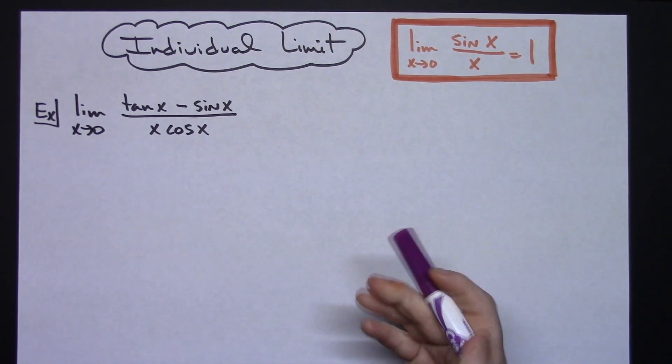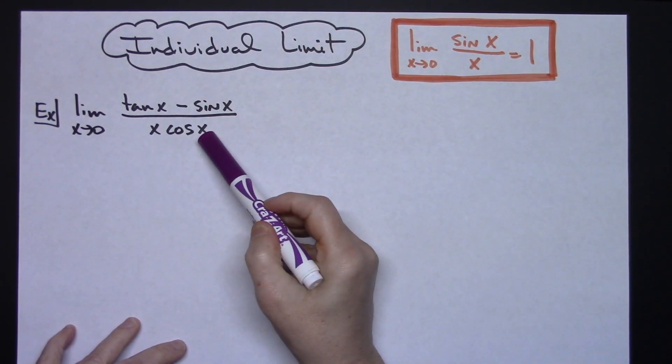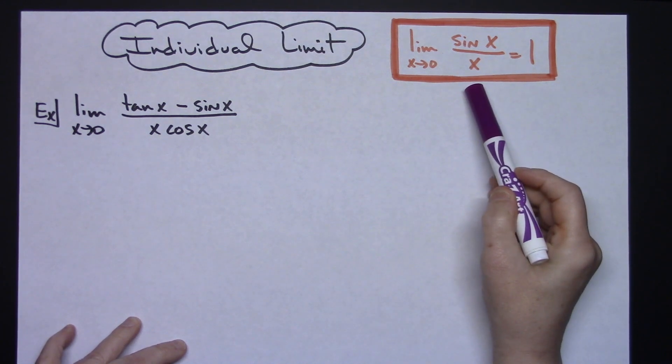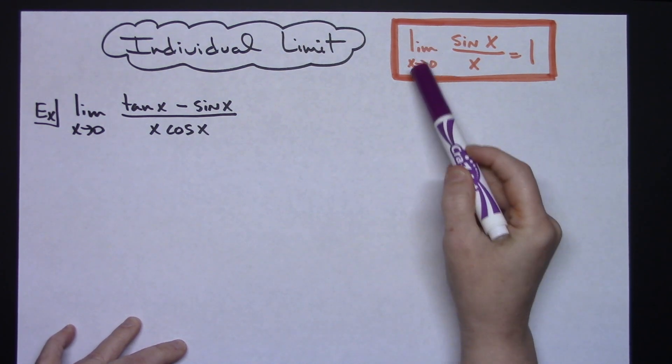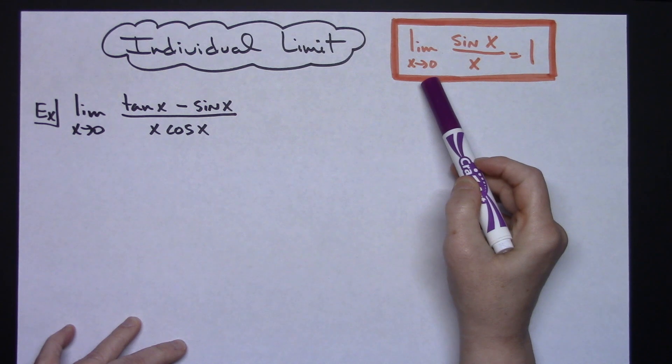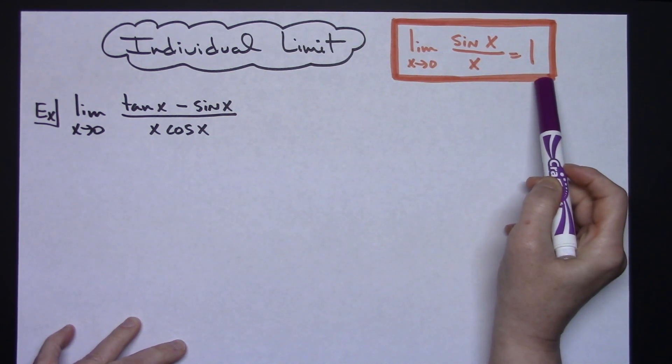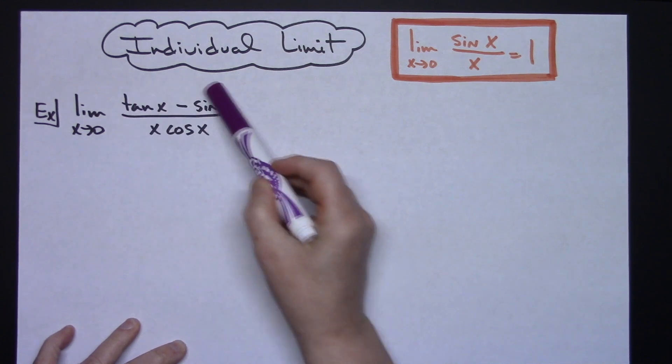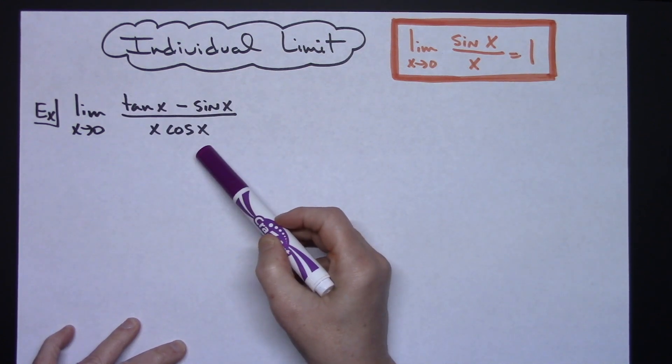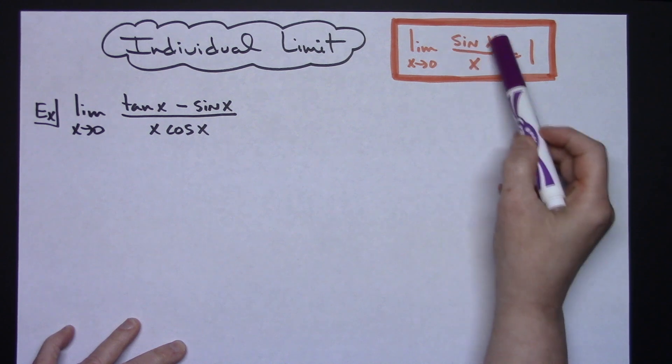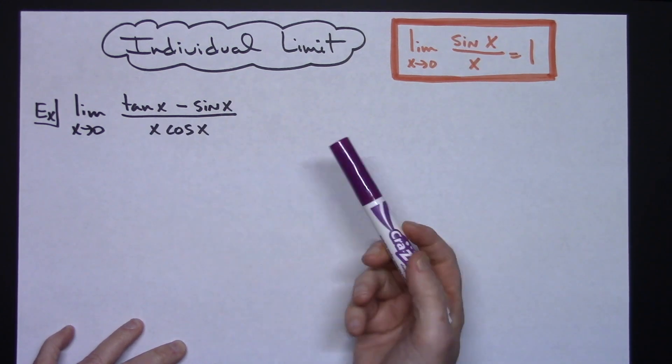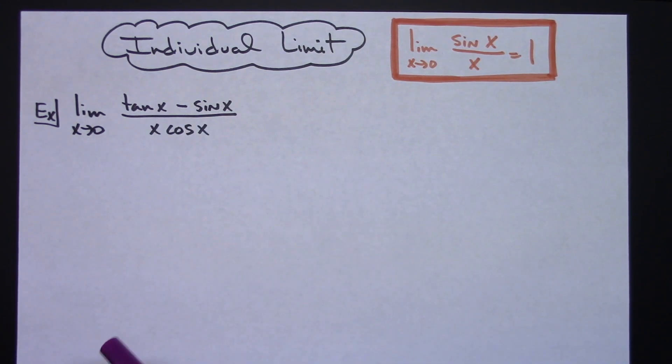In this video I'm going to work out a trig limit. I'm going to take advantage of this property: the limit as x approaches 0 of sin(x) over x equals 1. I'm going to algebraically manipulate this limit to hopefully get sin(x) over x, because I do have some sines in there, so that should give me the opportunity to take advantage of that property.